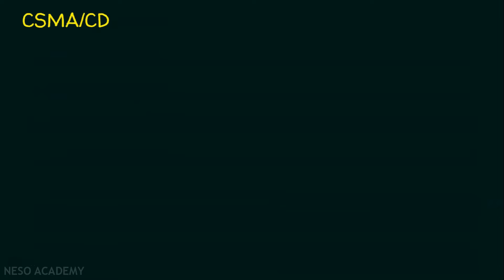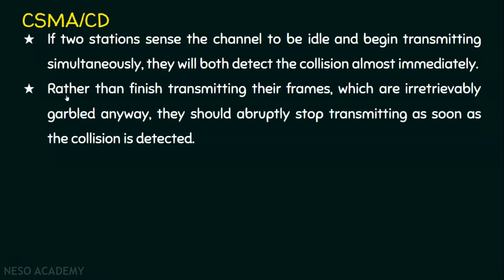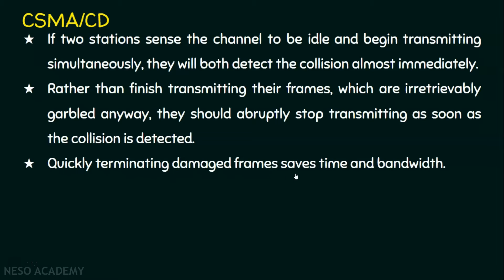CSMA/CD stands for Carrier Sense Multiple Access with Collision Detection. If two stations sense the channel to be idle and begin transmitting simultaneously, they both will detect the collision almost immediately. In CSMA/CD, rather than finishing transmitting their frames — which are irretrievably garbled anyway — they should abruptly stop transmitting as soon as the collision is detected. Quickly terminating damaged frames saves time and bandwidth.